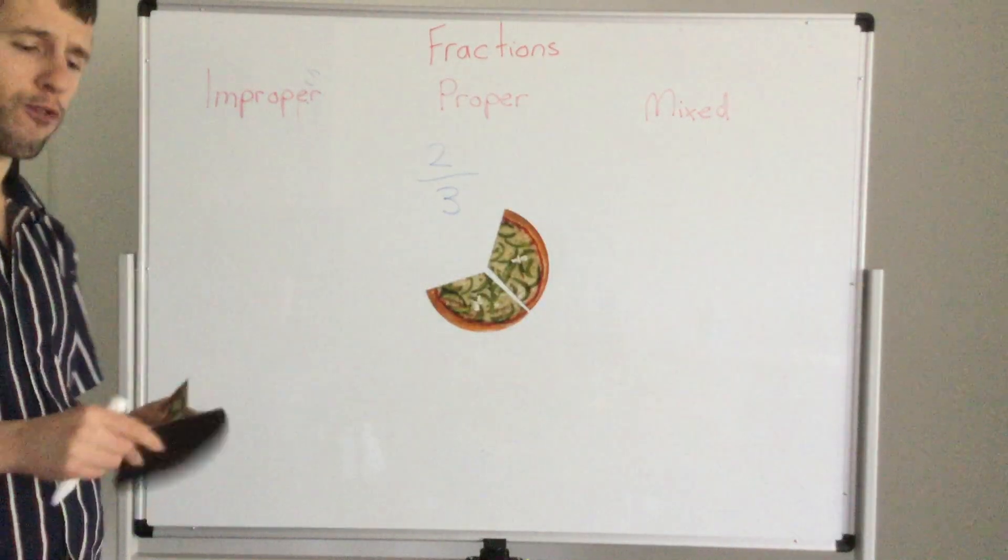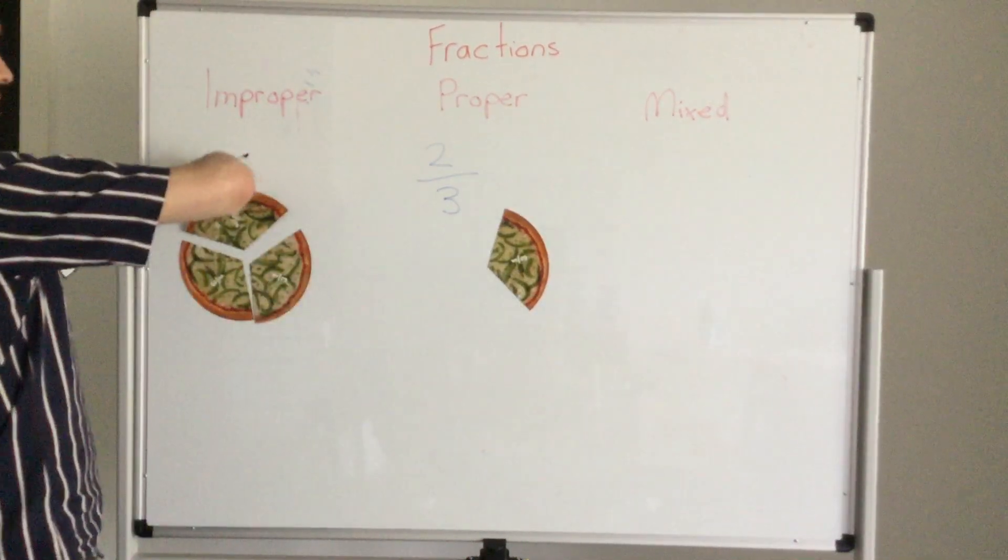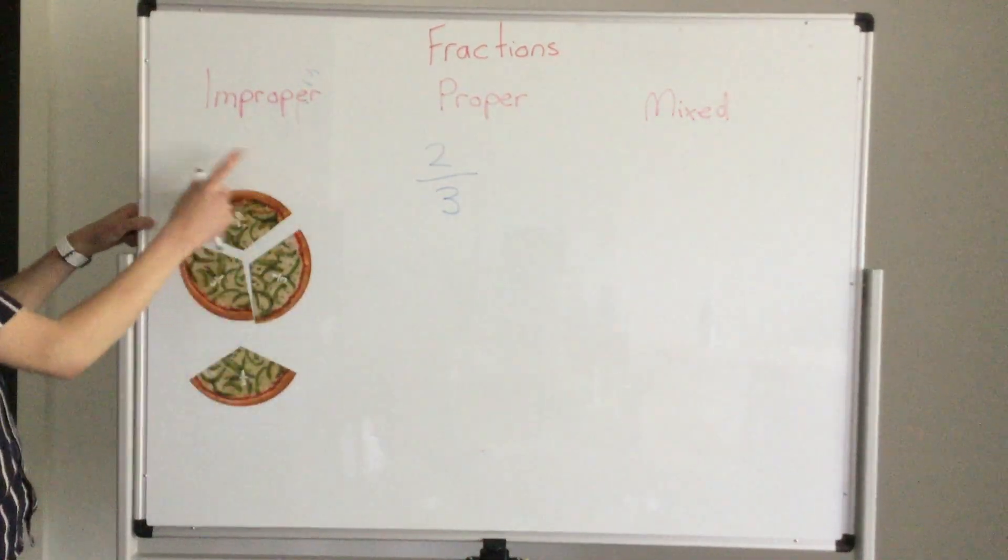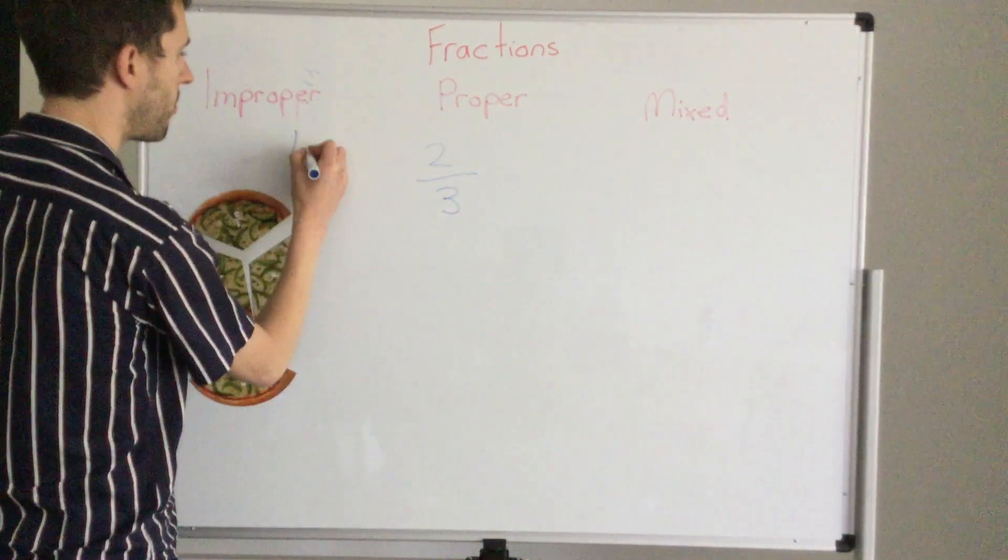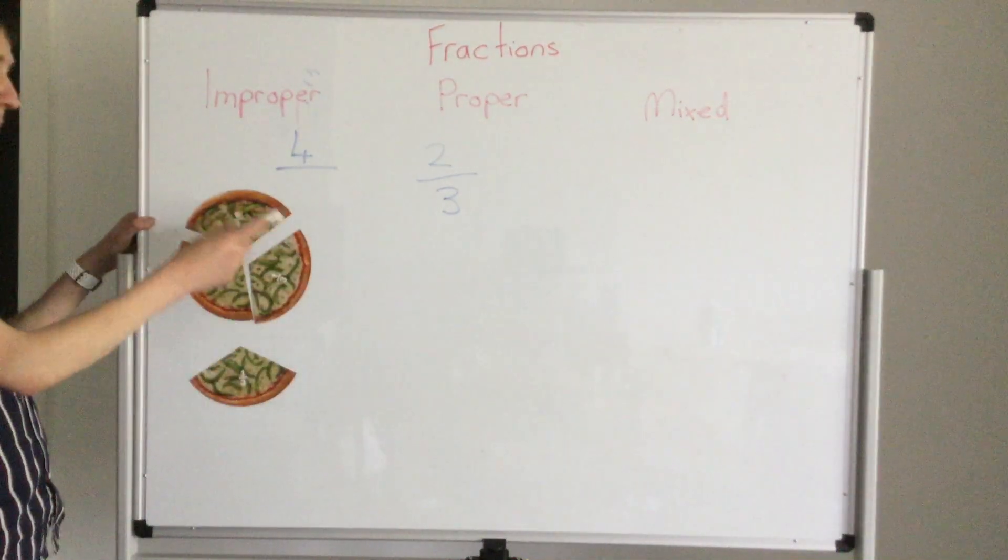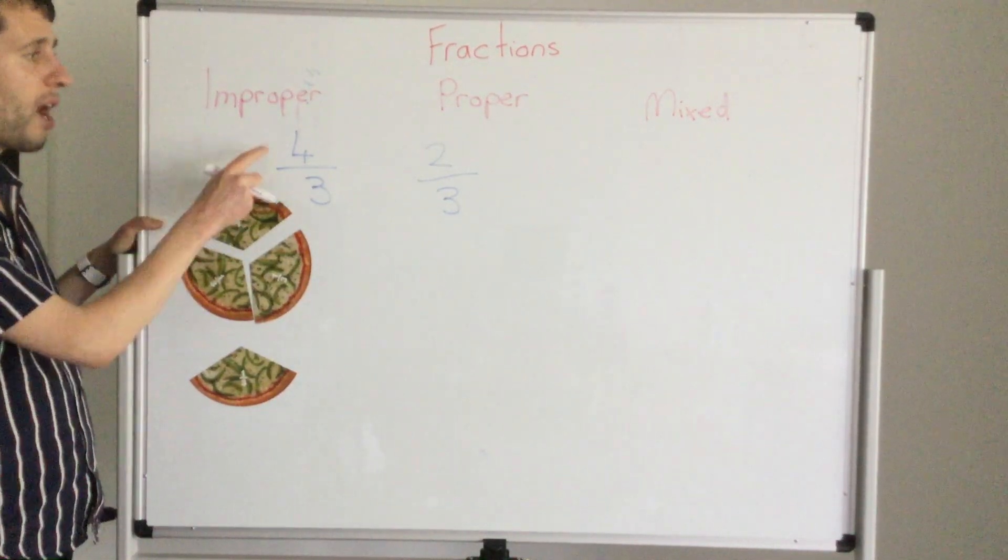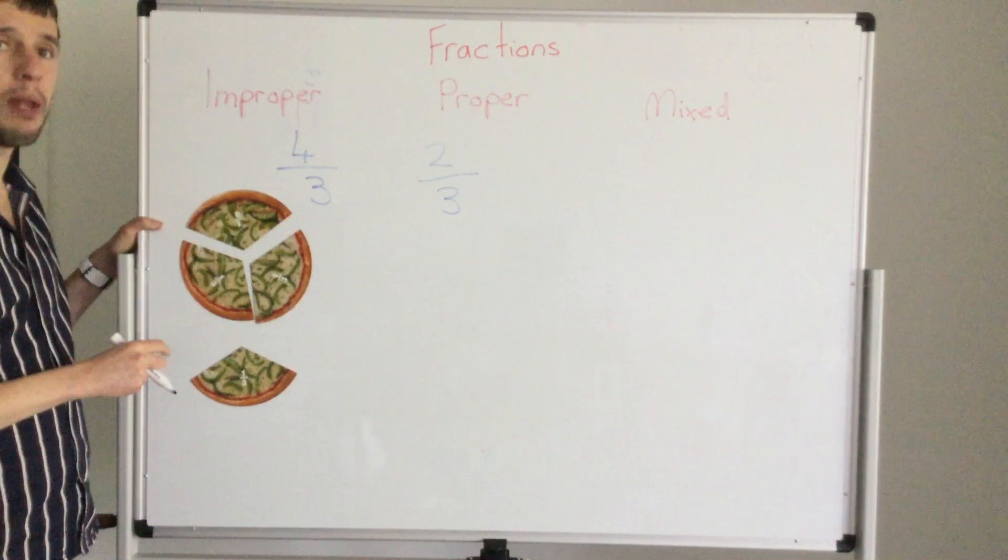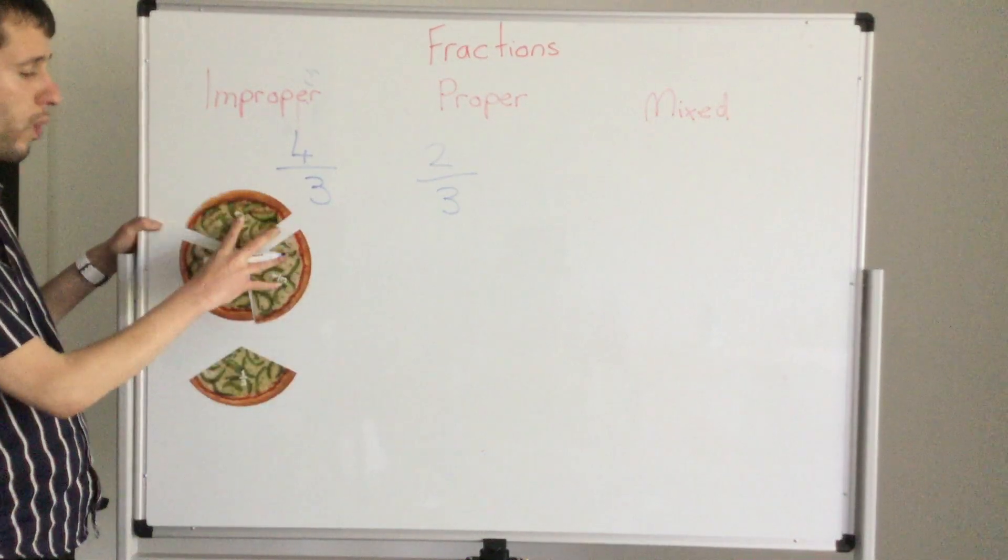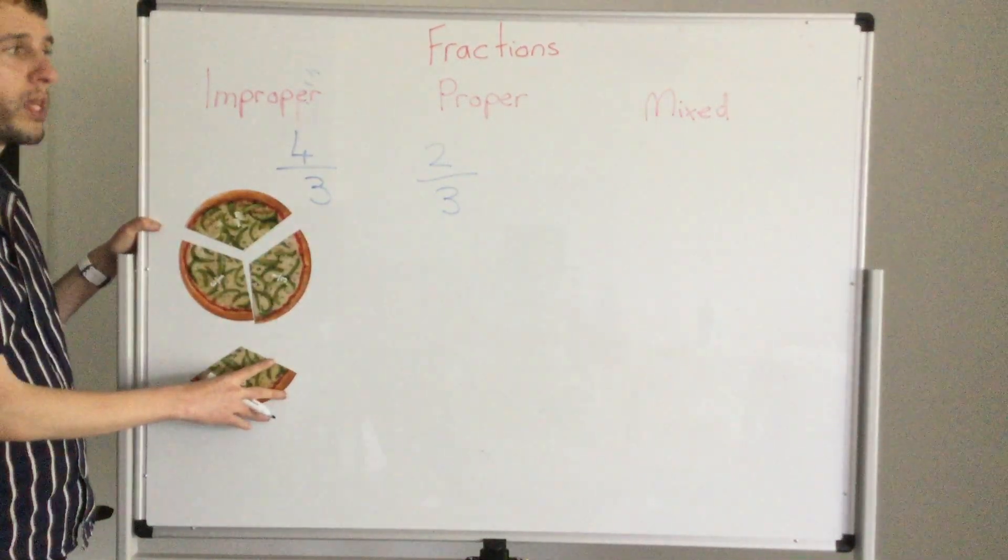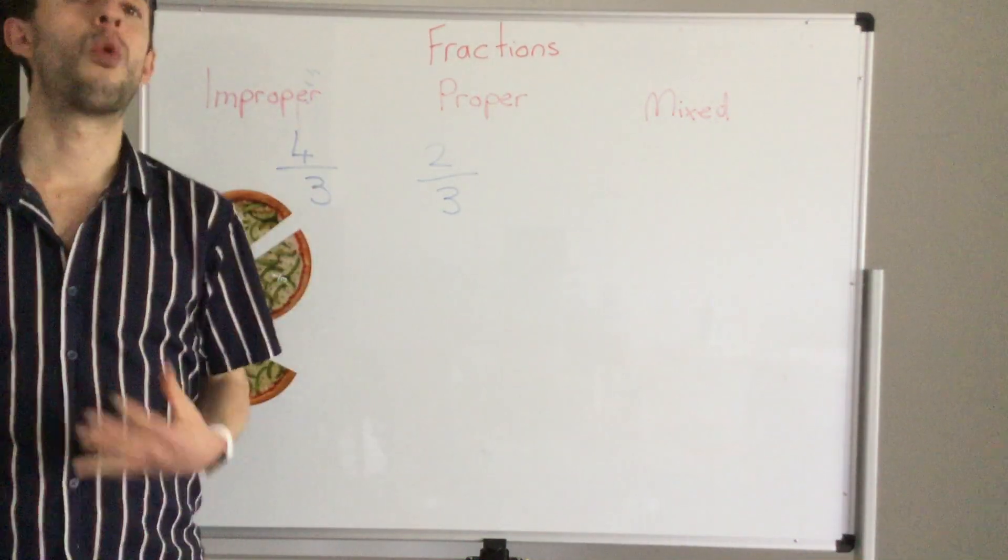An improper fraction. I've got how many pieces? One, two, three, four. What is my piece cut into? Three pieces. So an improper fraction is where our top number is bigger than the bottom number. So it means it's greater than a whole. It's bigger. This is one whole. We've got more than a whole. But the top just tells us how many pieces we have in total. The bottom is what it's cut into.